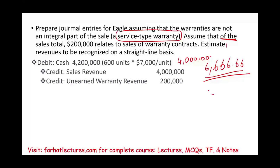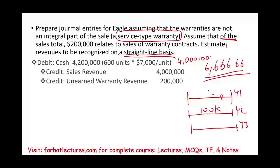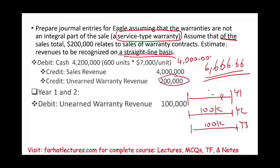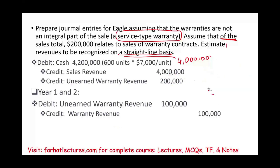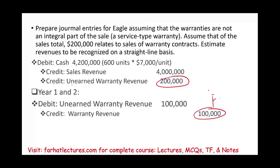At the end of year one, we recognize revenue from the service-type warranty on a straight-line basis. The warranty covers two years — year two and year three — so each year we record $100,000 of revenue. We debit unearned warranty revenue $100,000 and credit warranty revenue $100,000 each year. If the customer never returns for any repairs, we keep the full $200,000 as revenue. This is the key difference between a service-type warranty and a manufacturing warranty.